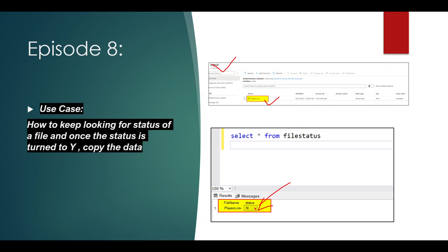Before copying, we need to check once this status column turns to Y. From the business perspective, once this file has been modified by the source team, they will update this status column to Y, and at that moment we have to copy the data from input to output container. In ADF we have a capability to run a pipeline as soon as a file is created or deleted using something called an event-based trigger, but there is no such capability to run a pipeline when a file is modified.